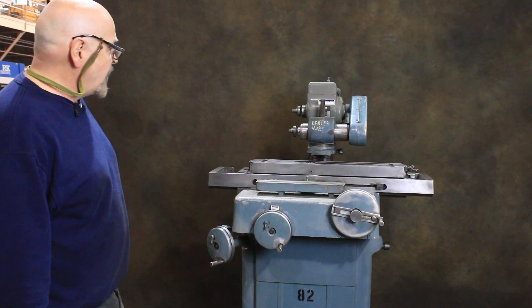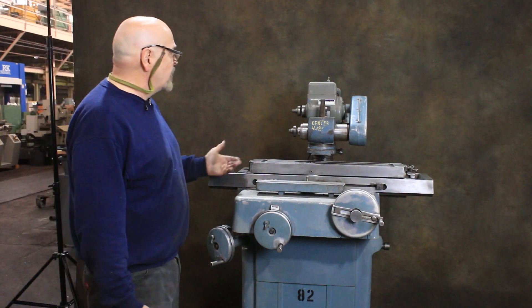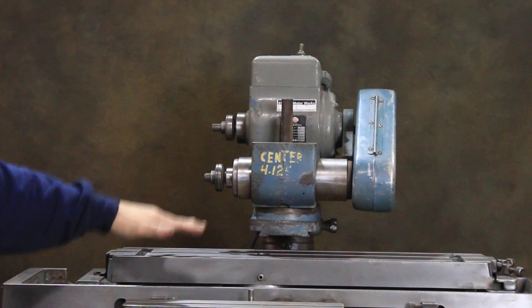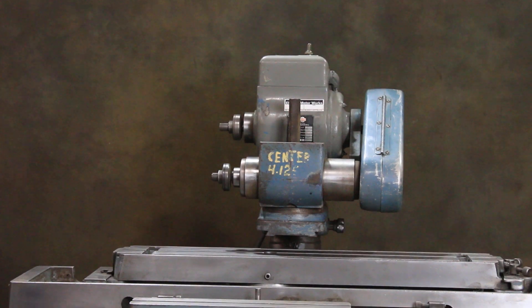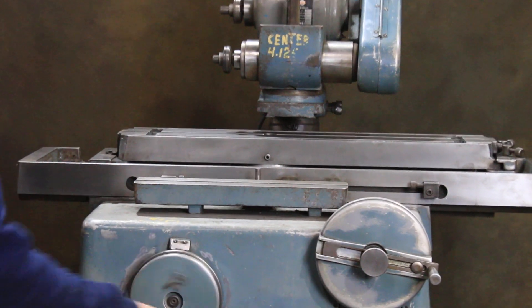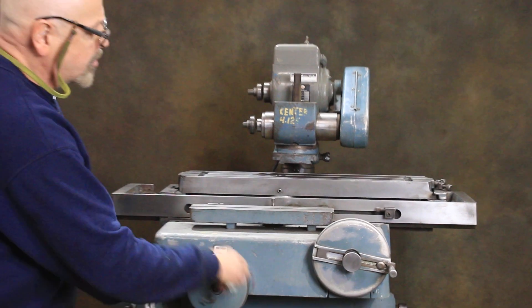What you have here is a grinding spindle that can be used in different configurations. You have a wheel head that can be raised up and down, a cross slide which moves in and out. You could use this even as a cylindrical grinder.